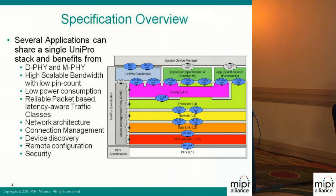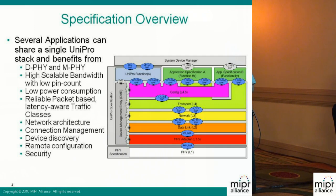The transport layer also takes care of connection management between peer devices, so all communication between two applications is connection-oriented. In order to configure the UniPro stack itself, there is an additional layer called CONFIG. The interface of this config layer is C-PORT on one side, and to the function it is the F-PORT or CONFIG SUB. Using this config, the master device is able to configure and discover all UniPro devices on the network — identifying whether it has a switch, a camera, a master, etc. — and also configure specific applications.